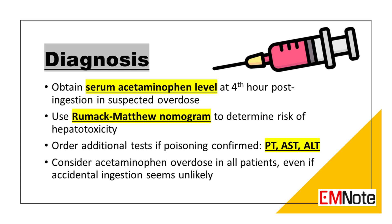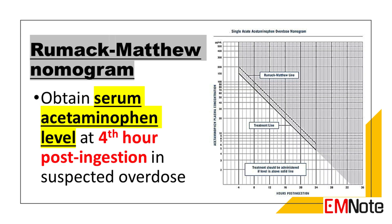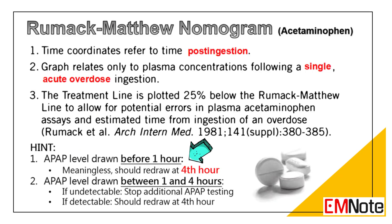Diagnosis. A serum acetaminophen level should be obtained in a patient with a suspected overdose. The Rumack-Matthew nomogram is used to plot the acetaminophen level and time since ingestion to determine the risk of hepatotoxicity and need for treatment with N-acetylcysteine. The nomogram is only applicable for single acute ingestion. Levels above the treatment line indicate the need for N-acetylcysteine therapy. Acetaminophen levels are typically measured at least 4 hours post-ingestion. Levels below 150 micrograms per milliliter indicate a low risk of liver damage, while higher levels suggest potential toxicity.